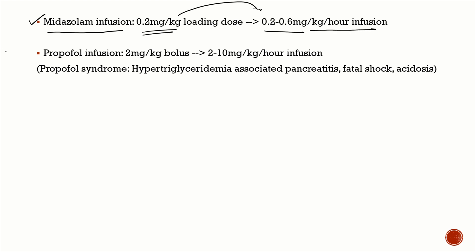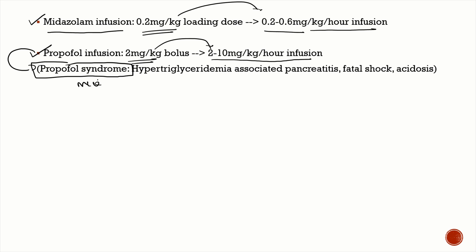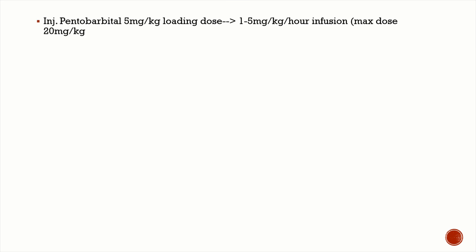Propofol can be given as a bolus dose of 2 mg/kg followed by 2 to 10 mg/kg per hour infusion. The problem with propofol is propofol infusion syndrome — an MCQ question — which causes hypertriglyceridemia, potentially leading to pancreatitis, shock, and acidosis. If the patient is still seizing, try pentobarbital at a loading dose of 5 mg/kg followed by 1 to 5 mg/kg per hour infusion to a maximum dose of 20 mg/kg.